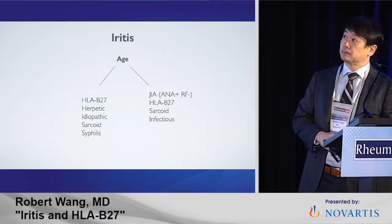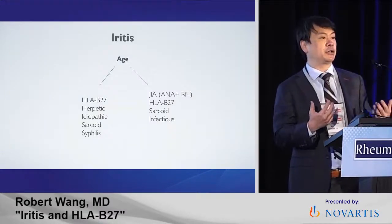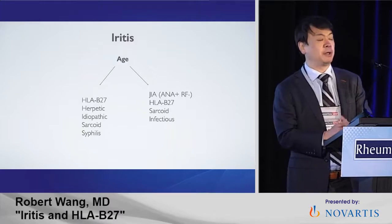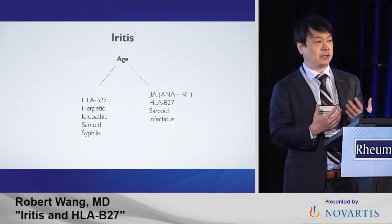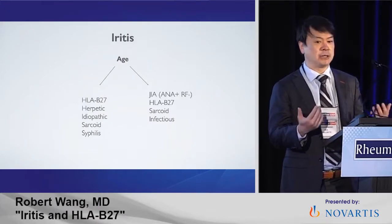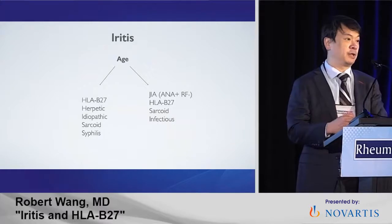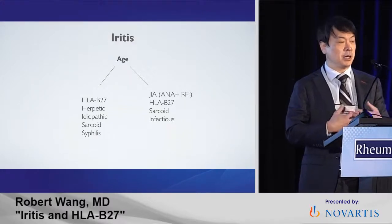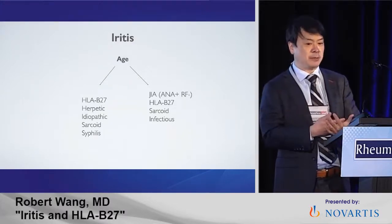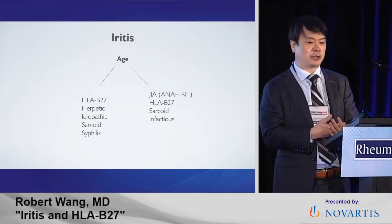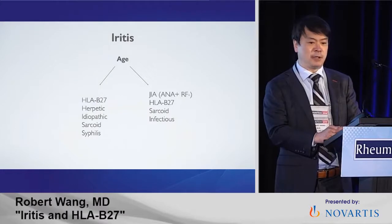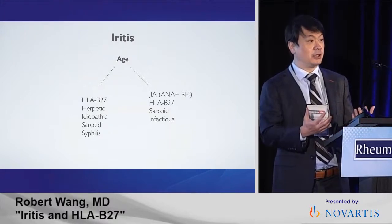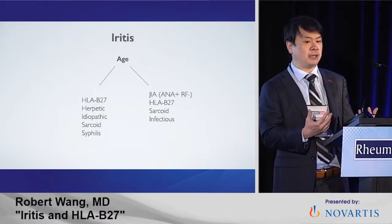When you talk about iritis or anterior uveitis, another way I like to break it down is by age. Anterior uveitis has a slightly different differential in kids versus adults. The biggest one in kids is juvenile idiopathic arthritis; HLA-B27 can be there, sarcoidosis, and infectious etiologies. But in adults, we tend to think of HLA-B27, herpetic eye disease, idiopathic sarcoid, syphilis, maybe TB. If you look at this list, the causes of iritis is actually pretty short.